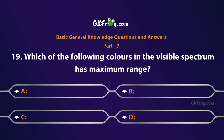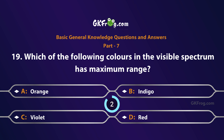Which of the following colors in the visible spectrum has maximum range? A. Orange, B. Indigo, C. Violet, D. Red. Correct answer is D. Red.